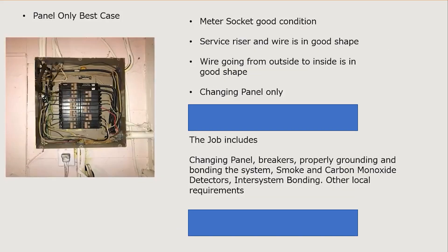Let's start with scenario one: the panel only. There can be a lot of variance — sometimes the panel may be recessed in the wall, sometimes surface mount, sometimes it has to be moved out of a closet. These things can really escalate the cost. Also note: your area may be much higher. We're post-COVID in a very inflationary market, so these may be very low or very high depending on your location. This scenario assumes the meter socket outside, the service riser, and the wire are all in good condition.